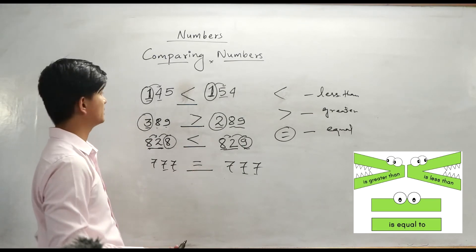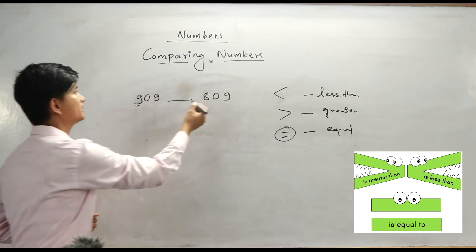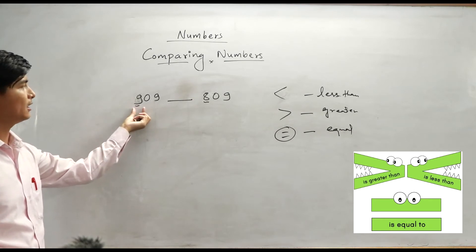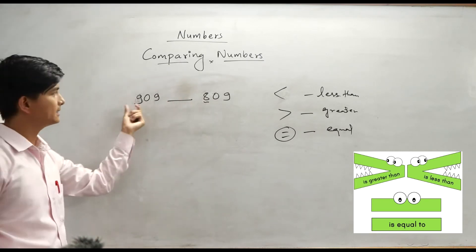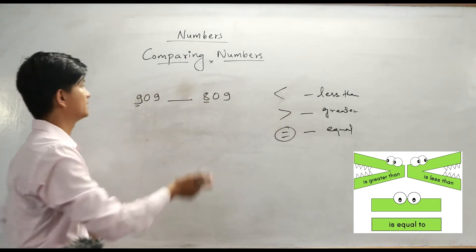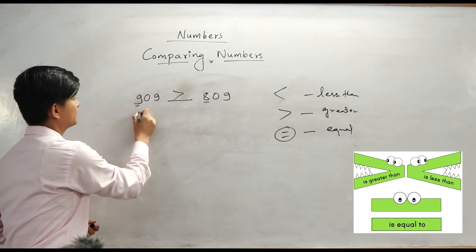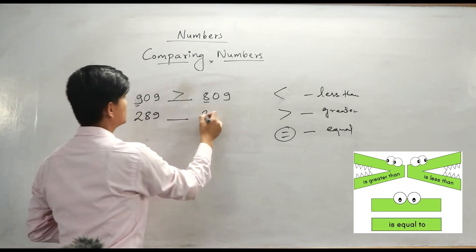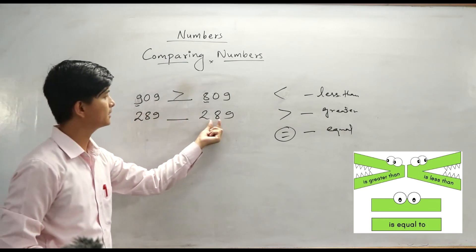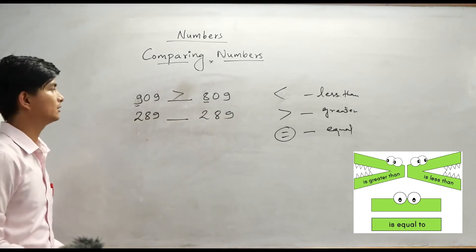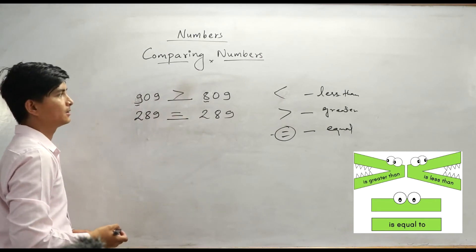Next, 909 and 809. Compare the hundreds place first — 9 versus 8, so we put the greater than symbol here. And for 289 compared to 289: hundreds place has 2 and 2, tens place has 8 and 8, ones place has 9 and 9 — all equal, so both numbers are equal and we apply the equal symbol.